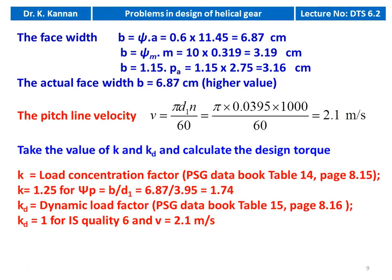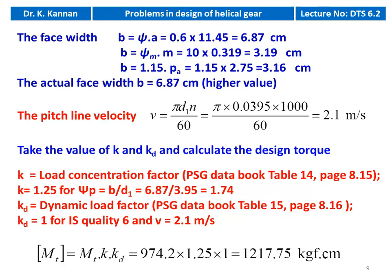We determine the KKD value for checking. Load concentration factor K = 1.25 for ψp = b/d1 = 1.74. Dynamic load factor Kd = 1 from table 15 for IS quality 6 with velocity v = 2.1 m/s. Revised design torque [Mt] = Mt × K × Kd = 974.2 × 1.25 × 1 = 1217.75 kg/cm.